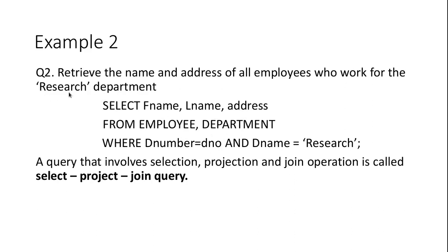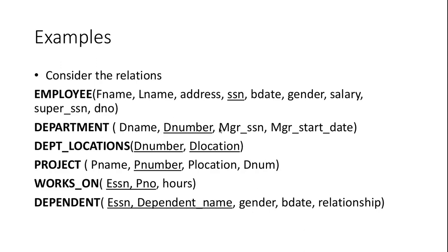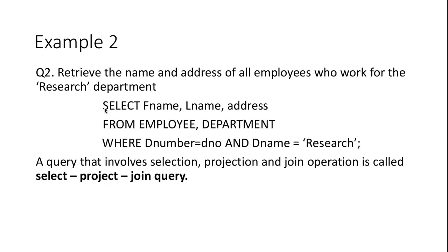The Department relation is included because we have to check whether DepartmentName is 'Research'. The join condition is DNumber = DNO — in the Department table, department number is represented as DNumber, and in the Employee table it is represented as DNO. The second condition is DepartmentName = 'Research'. This query returns the first name, last name, and address of all employees who work in the Research department.